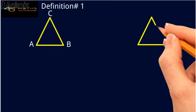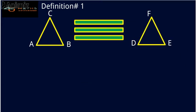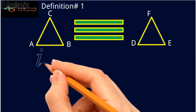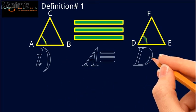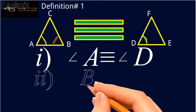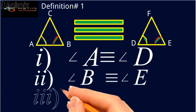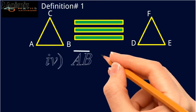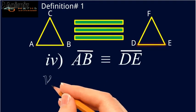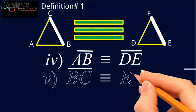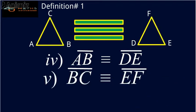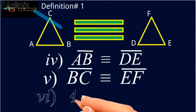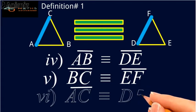Two triangles ABC and DEF are said to be congruent if the following six conditions hold. Number one: angle A is congruent to angle D. Number two: angle B is congruent to angle E. Number three: angle C is congruent to angle F. Number four: side AB is congruent to side DE. Number five: side BC is congruent to side EF.